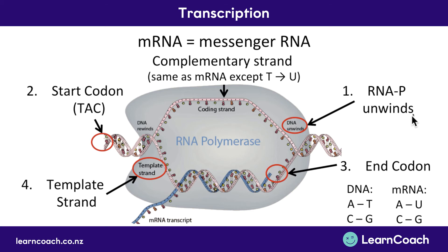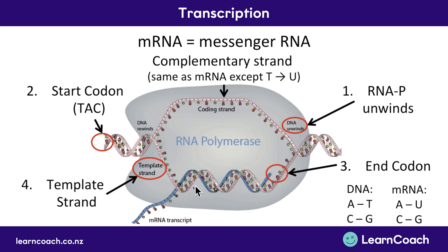So to summarise the process: the DNA is unwound, it finds a start code in the DNA signalling where to begin, and there's also a stop code telling it to end protein making. One strand — the template strand — gets read by the mRNA, which matches against it. The complementary DNA strand looks the same as mRNA except that T is swapped with U.